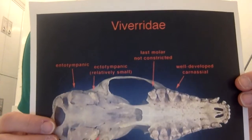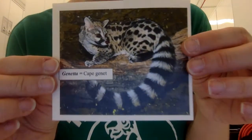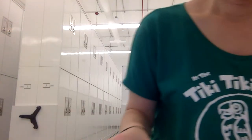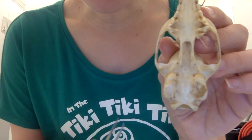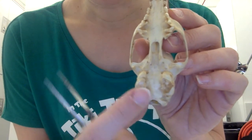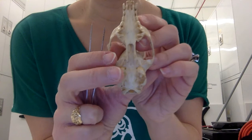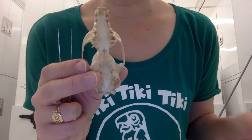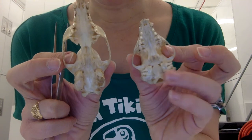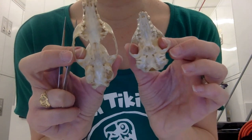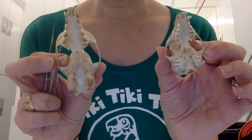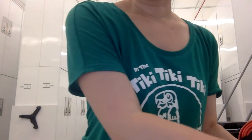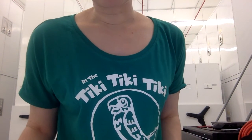And then we move on to Viverridae. The example you're looking at is the genet. Again, we see a subdivision in the bulla, but it's less extreme. What you don't see in Viverridae is that really distinct foramen leading into the bulla that you do see in Herpestidae. So that's Herpestidae versus Viverridae — and that was Station 8, which wraps up the rest of our feliformia.